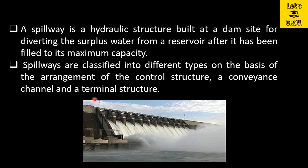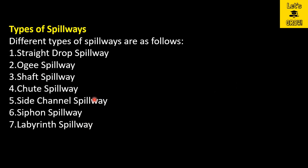Types of spillways: there are different types of spillways. The first one is straight drop spillway, second is ogee spillway, third is shaft spillway, fourth is chute spillway, fifth is side channel spillway, sixth is siphon spillway, and seventh is labyrinth spillway. We are going to discuss these one by one.